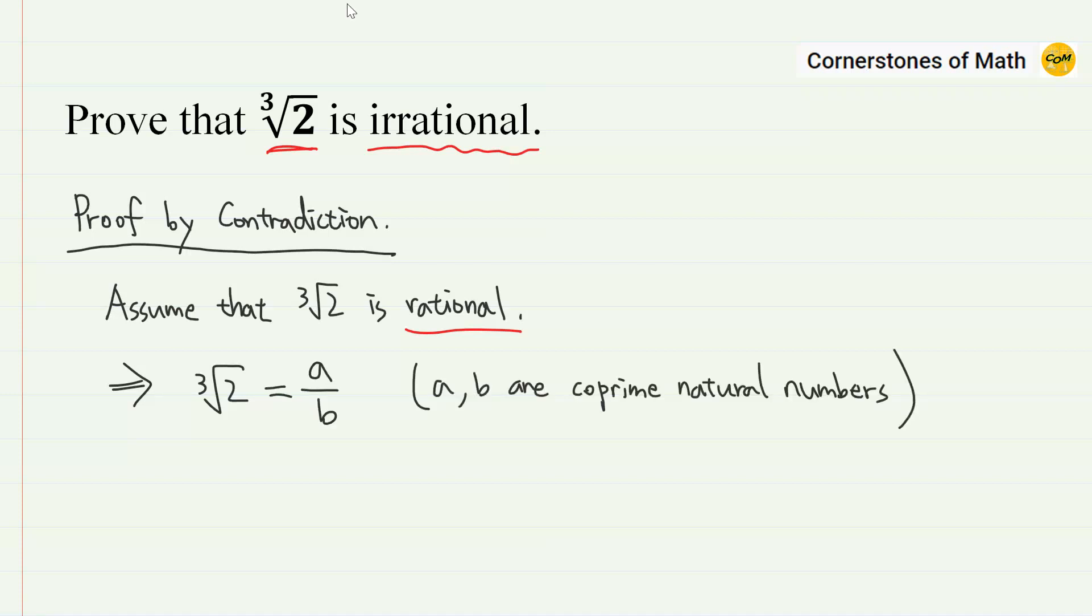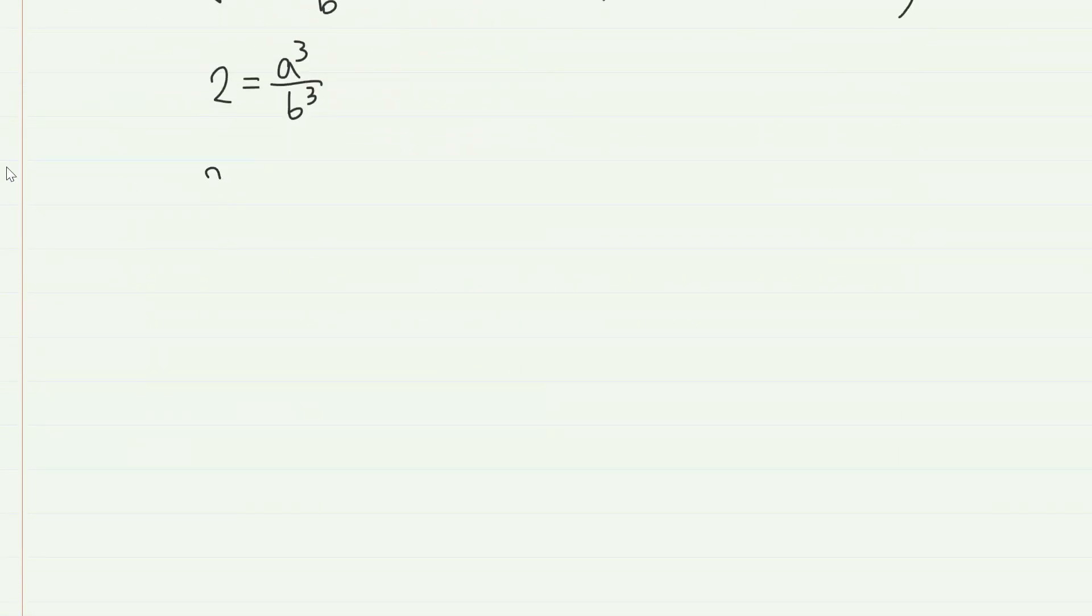If we cube both sides, we have 2 equals a cubed over b cubed. So we have 2b cubed equals a cubed. Now, if we split this 2b cubed into b cubed plus b cubed, we have b cubed plus b cubed equals a cubed.